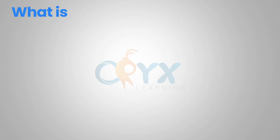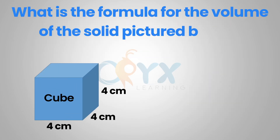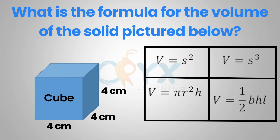What is the formula for the volume of the solid pictured below? The solid is a cube — we know that because all sides are the same measurement: four centimeters by four centimeters by four centimeters. The volume of a cube is represented with the formula v equals s to the third.